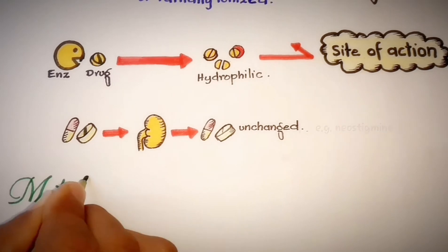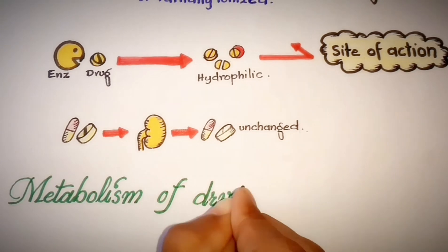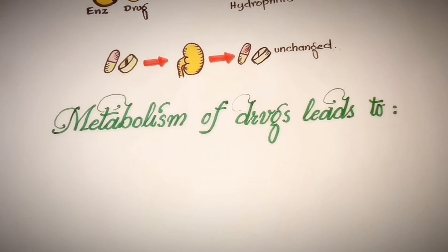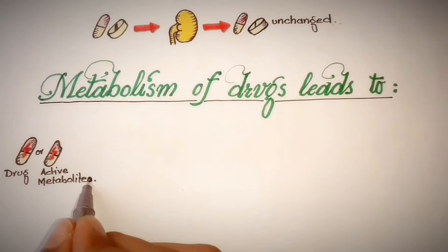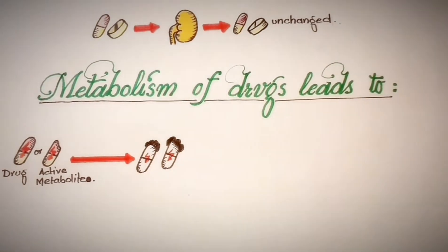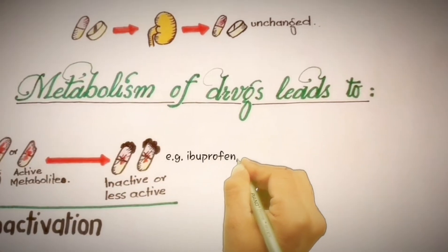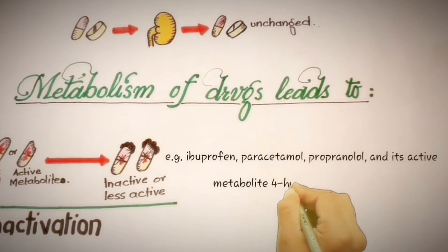Metabolism of drugs leads to inactive or active metabolites. The first is drug inactivation: most drugs and their active metabolites are metabolized to inactive or less active and more ionized forms, for example ibuprofen, paracetamol, propranolol and its active metabolite 4-hydroxypropranolol.